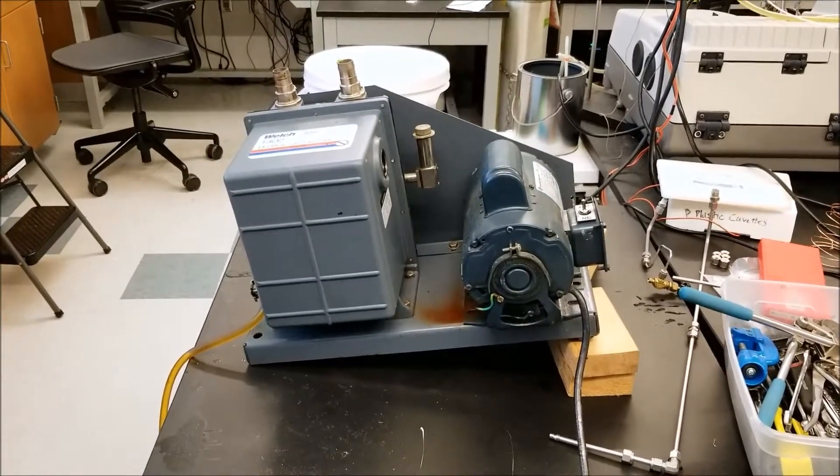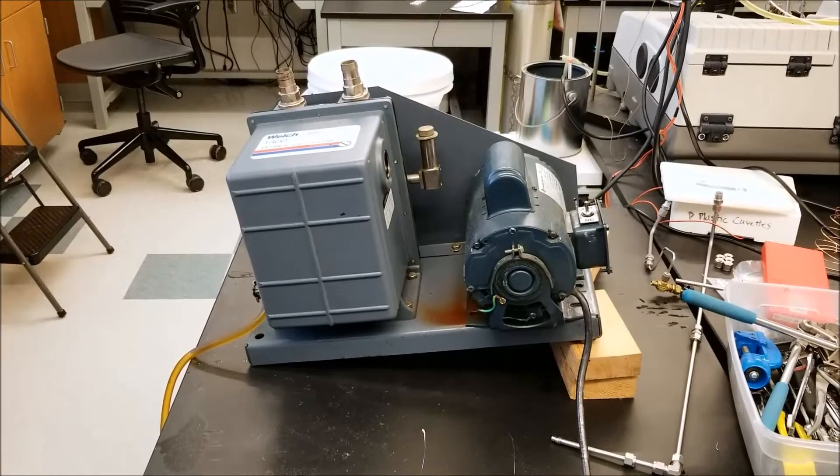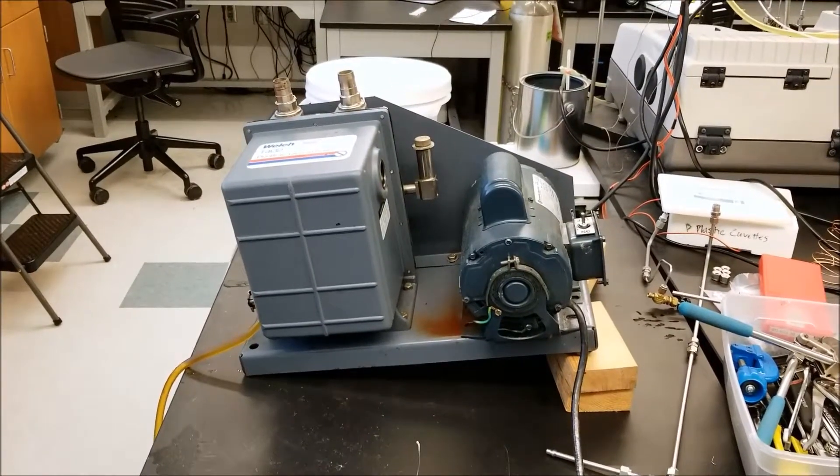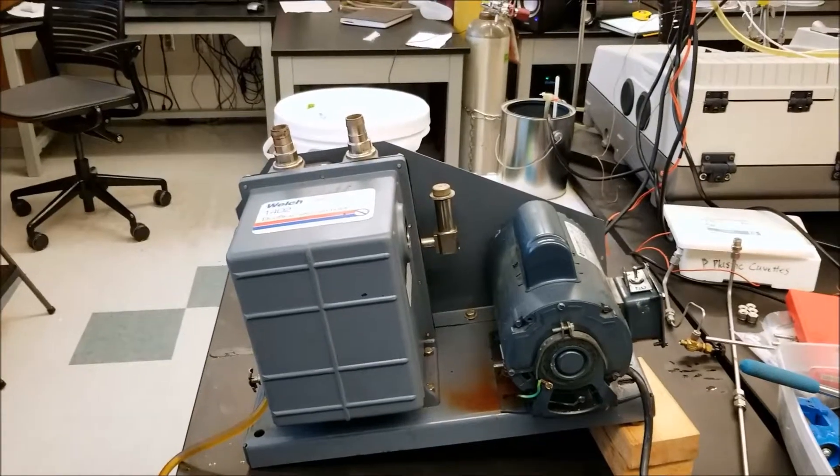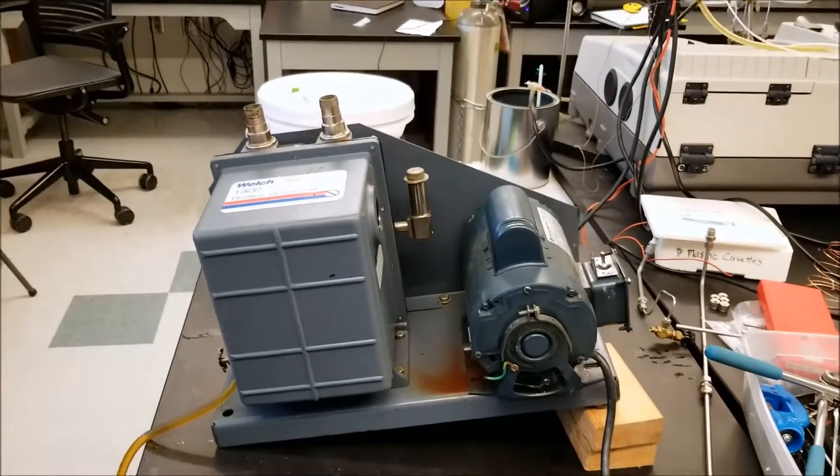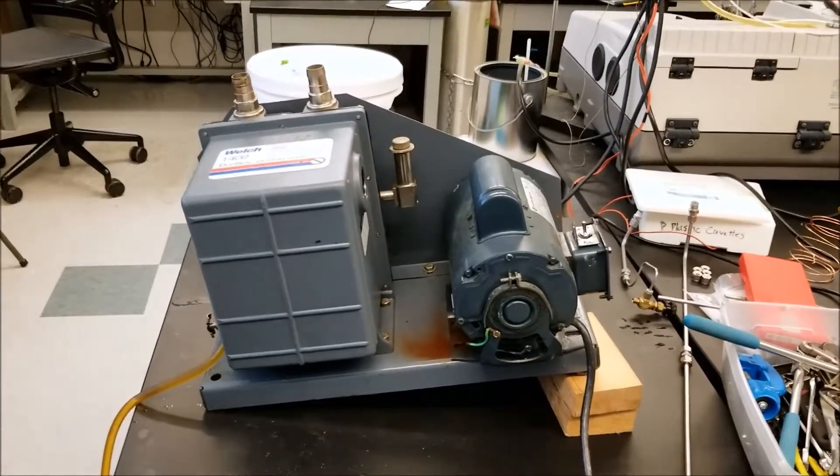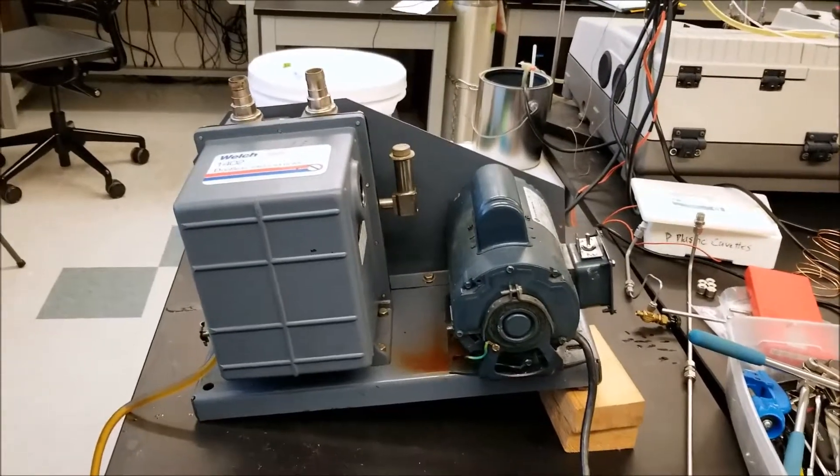All right, every six months we need to do an oil change on the roughing pump for the turbo pump system. Similar to a car, you need to change the oil periodically within the pump. We have it currently on a six-month schedule. The manufacturer recommends every four to six months.